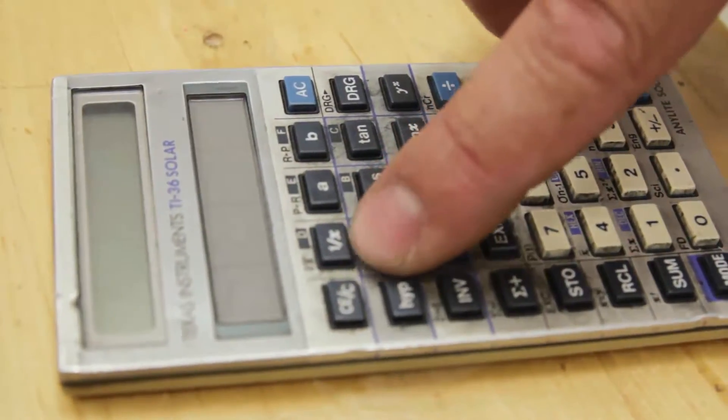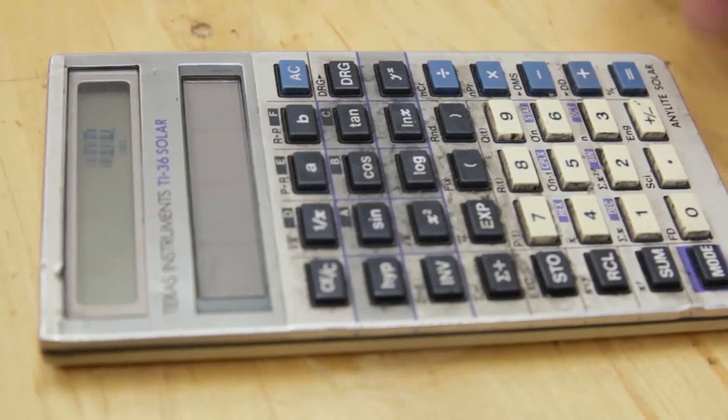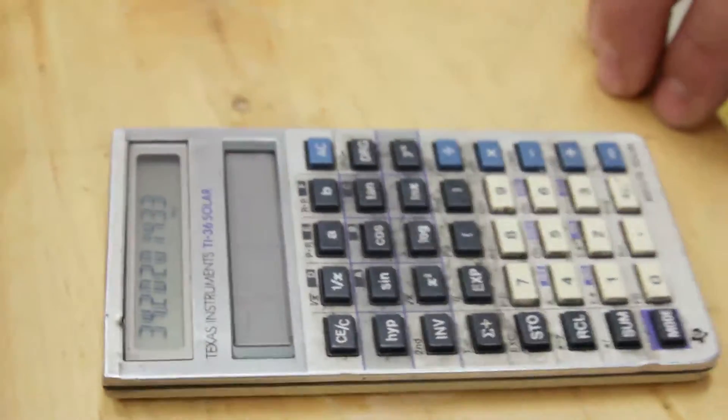So I take the angle that I want to set it at, sine of that angle, 20 degrees sine, times 100mm. That will give you my stack up to produce that angle.